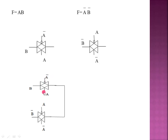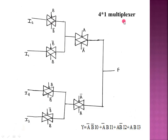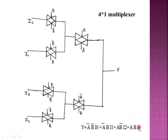This is a multiplexer. The multiplexer function is: A-bar·B-bar·I0 plus A-bar·B·I1 plus A·B-bar·I2 plus A·B·I3. That means input I0, I1, I2, I3. When A,B equals 0,0 the output is I0; when 0,1 the output is I1; when 1,0 the output is I2; when 1,1 the output is I3.